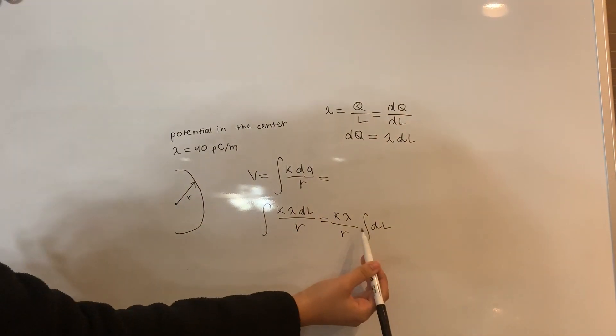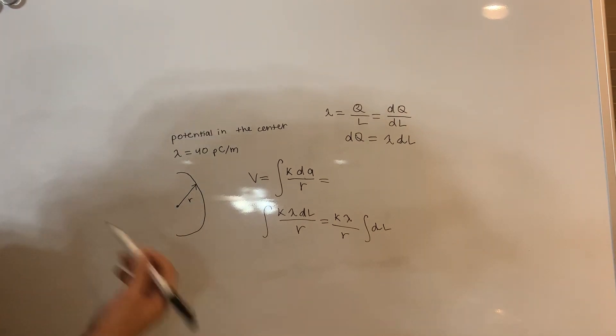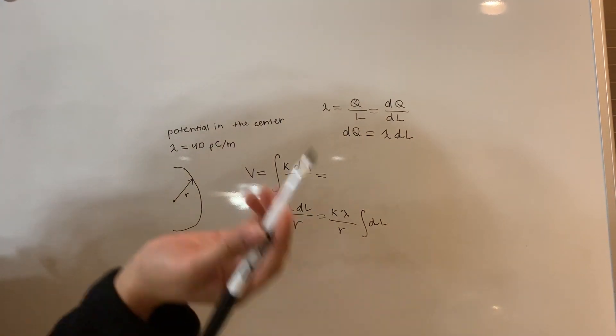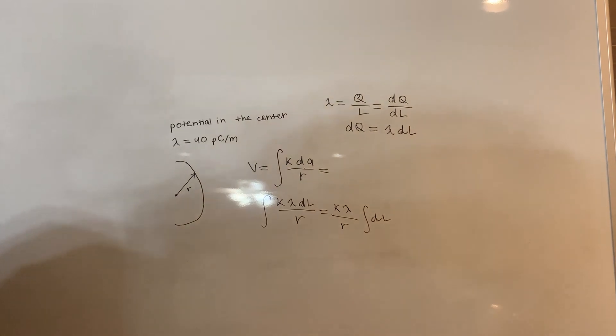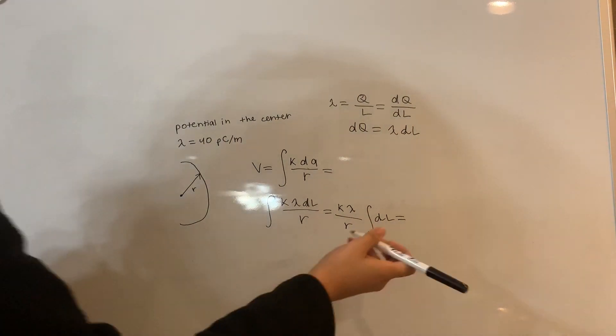And the integral of dl is just going to be your total length. And this here is a semicircle. So the length or circumference of a whole circle is 2 pi r, so a semicircle is going to be pi r. We can just replace the integral with that. I'm running out of space, I'm going to move over here.